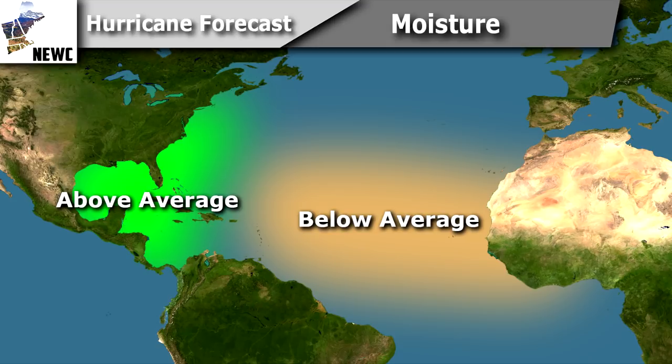That's going to really play a lot into my forecast. The above-average moisture area is where a lot of weaker systems — sometimes very strong systems, but most of the time just tropical storms or very weak hurricanes — form and then hit some of the Gulf states, Florida, Cuba, and Mexico. So that's also very interesting.